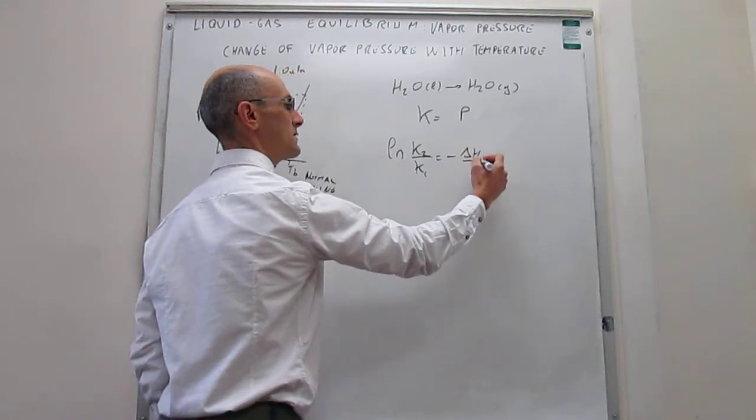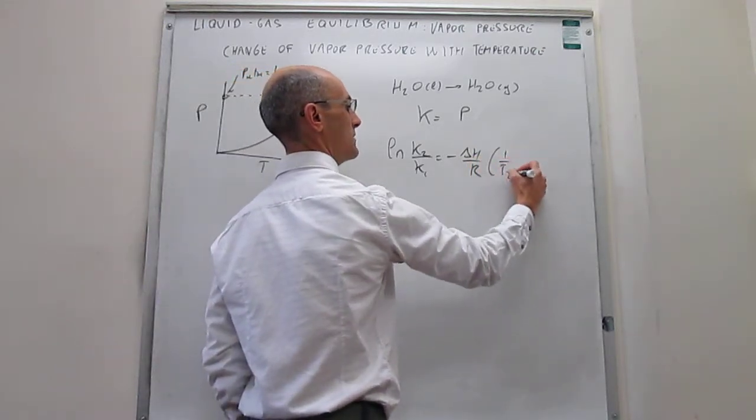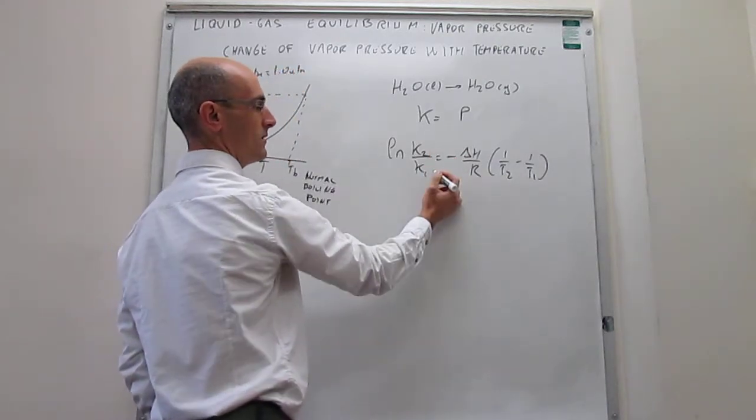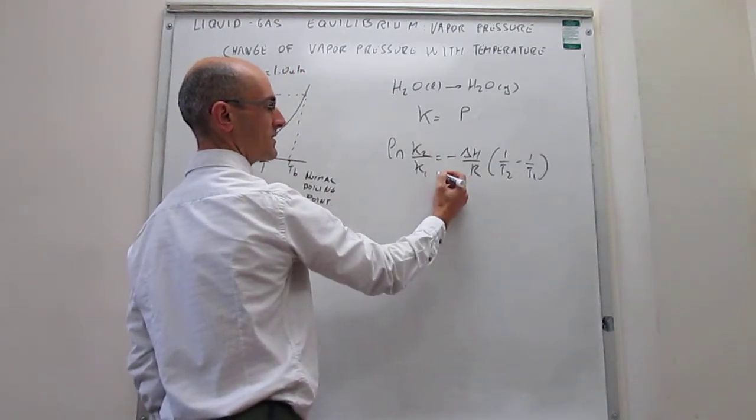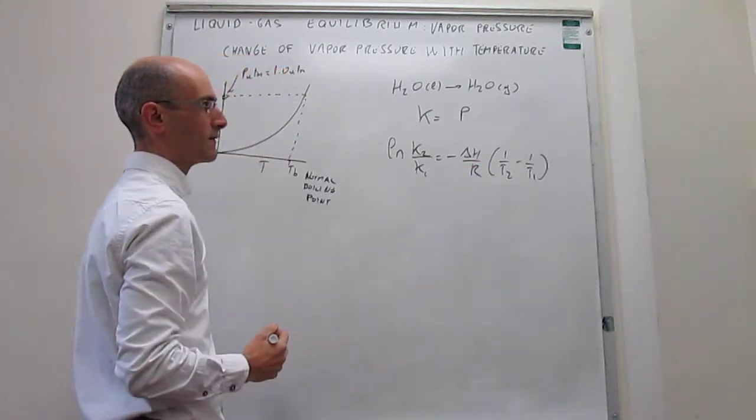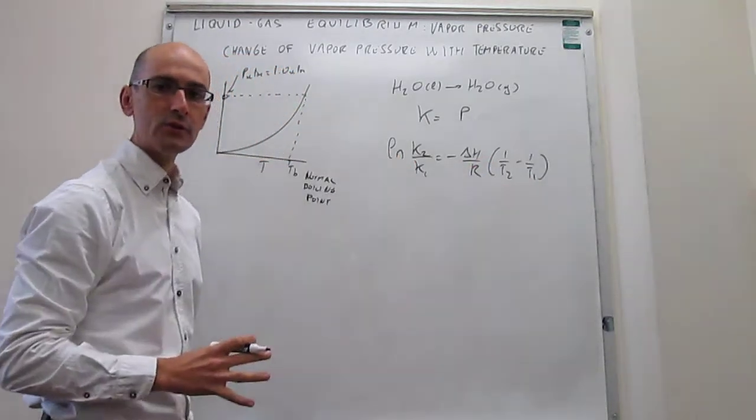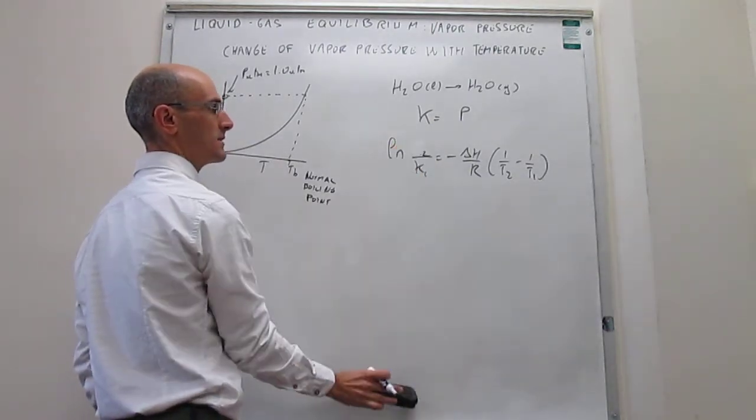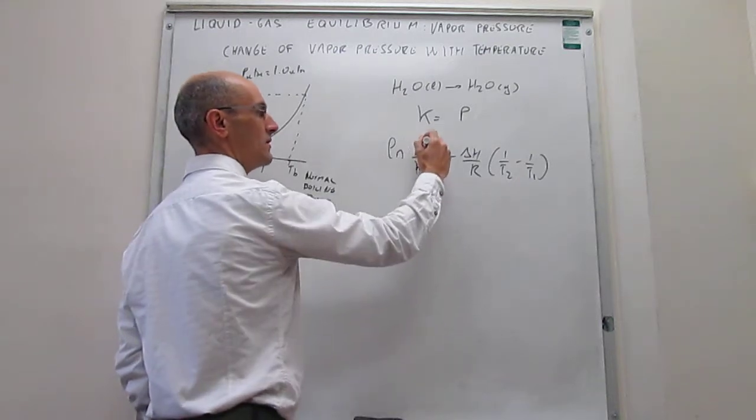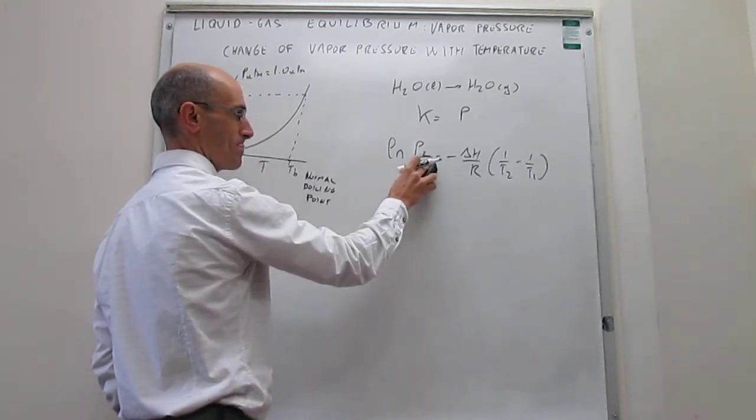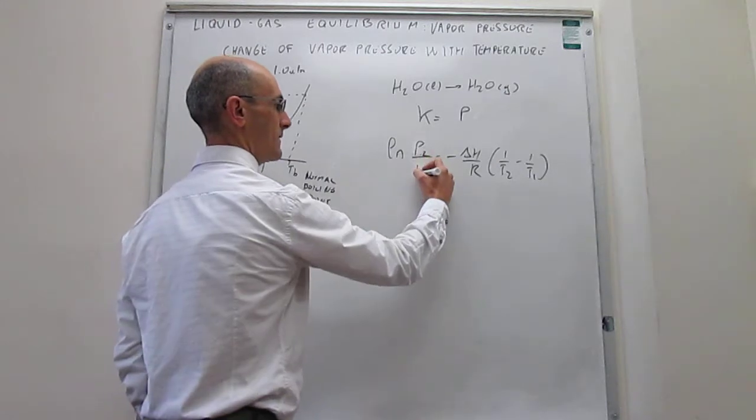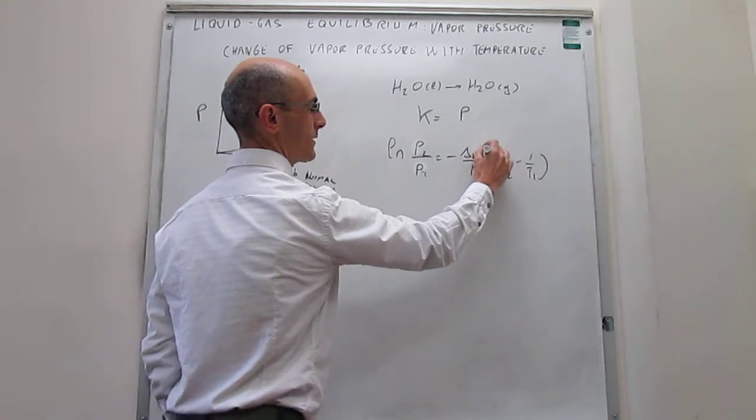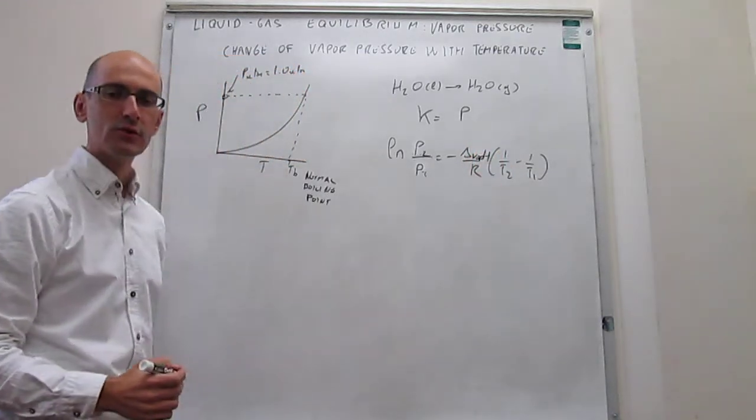It's just the enthalpy of the process, 1/T2 minus 1/T1. So the equilibrium constant at a temperature of T2 is related to the equilibrium constant at a temperature of T1 by this expression that depends on the enthalpy. If we apply that expression to a liquid to gas phase transition, then what will happen is that now these equilibrium constants are simply the vapor pressures of the liquids at the two temperatures. And then this enthalpy right here is simply the vaporization enthalpy, which is the enthalpy controlling that phase transition.